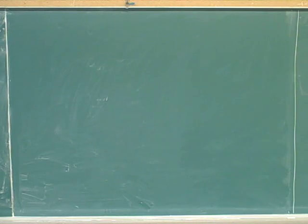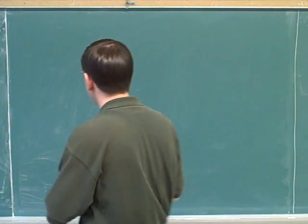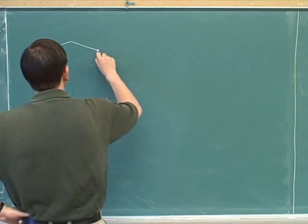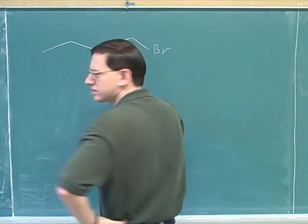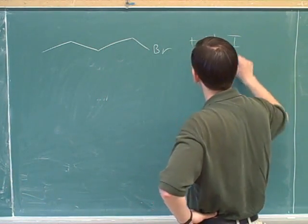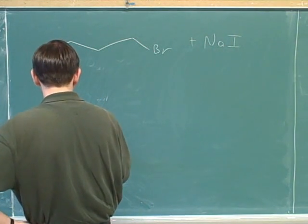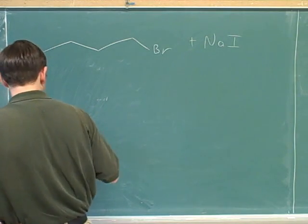It's 1-bromobutane reacting with sodium iodide in an SN2 reaction. And then the other one is, I guess the other one is actually 2-bromopropane. Like this? Yes.